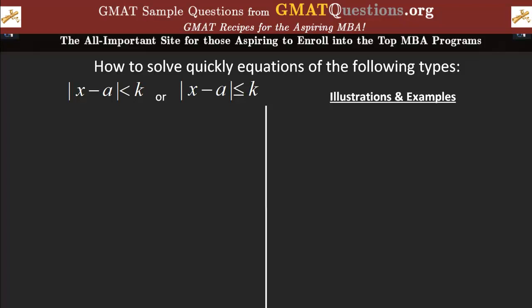Hello, this is Dr. Azou and in this recording I'll show you how to solve quickly equations of the type you see here. That is, the absolute value of x minus a less than k, or perhaps the absolute value of x minus a less or equal to k. We're going to solve the first type, which is the same by the way. The second type is no different. You just have the equal sign, but the solving process is exactly the same.